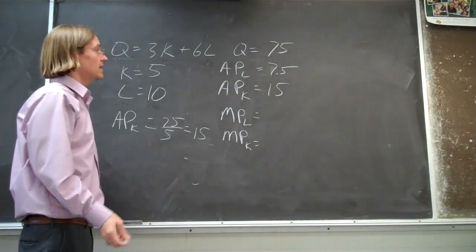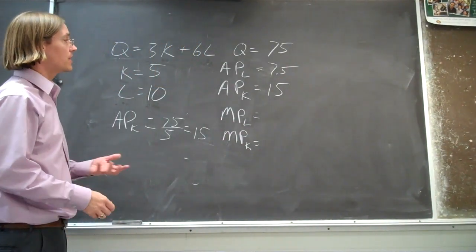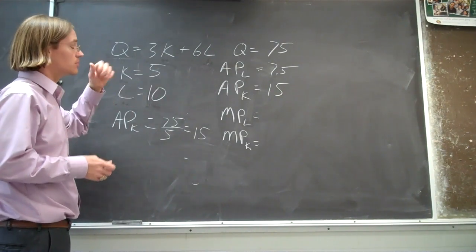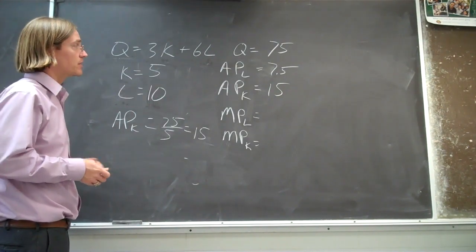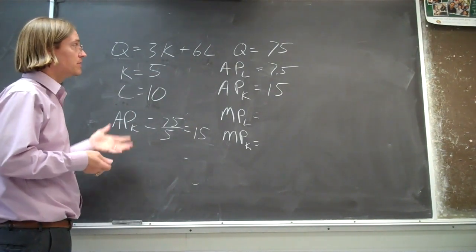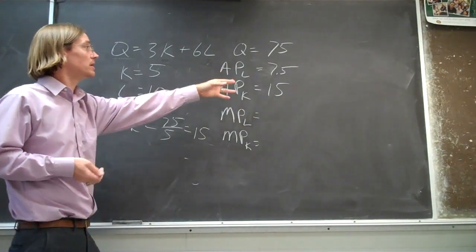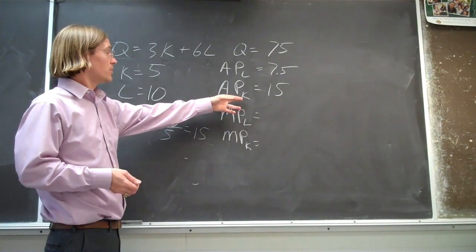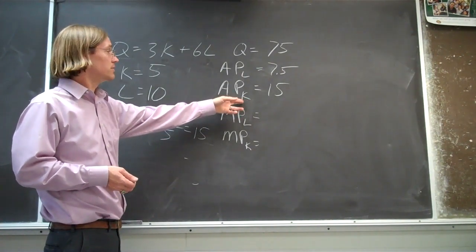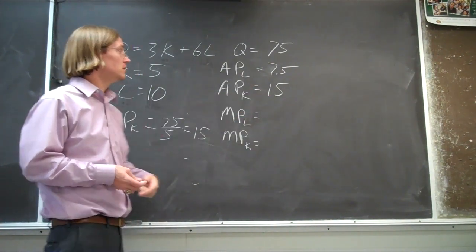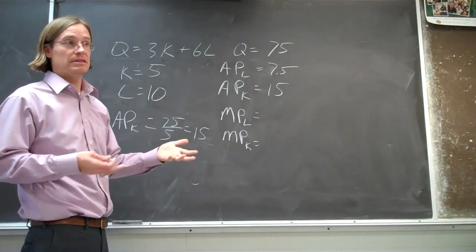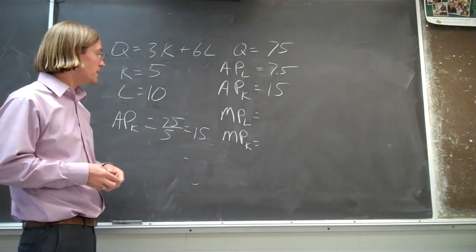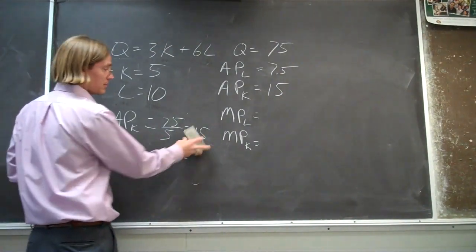So with every unit of labor we put in, on average we're getting about seven and a half units of output back. And on average, each unit of capital is giving us fifteen units of output back.